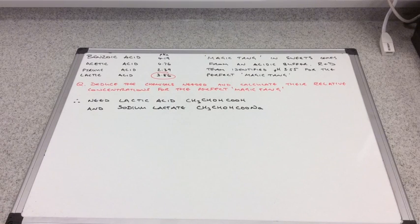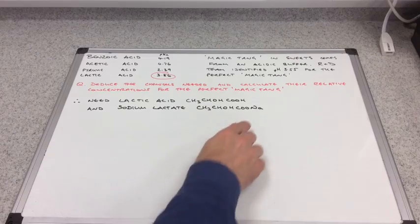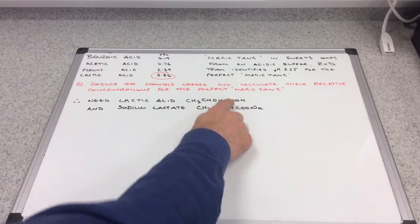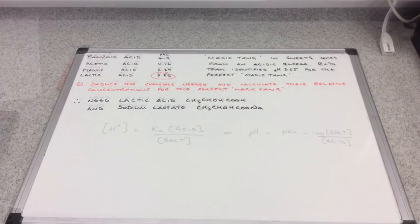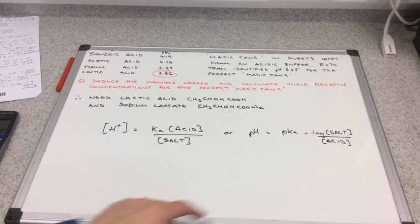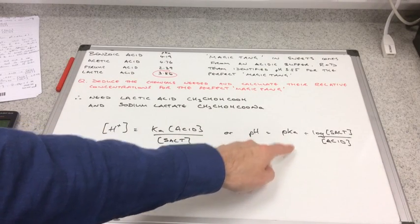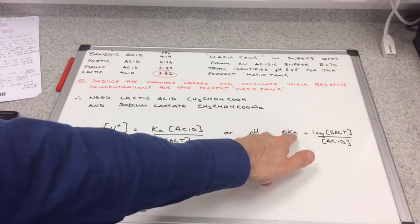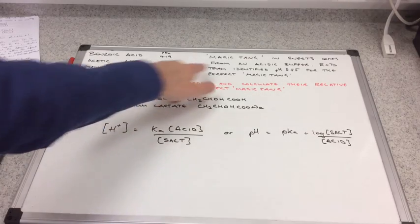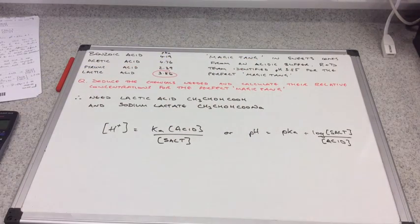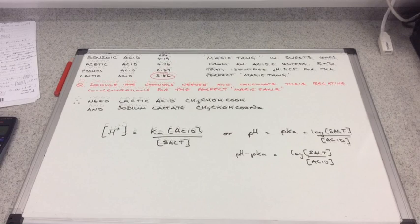We're applying what we've been told in college about ethanoic acid and sodium ethanoate. We're just applying that to this more complicated example. There's the two equations you can use. I'm going to use this one because we've got pH and pKa in this equation, and that's actually the data that we've got. You can do that one, but I'm going to use this one.